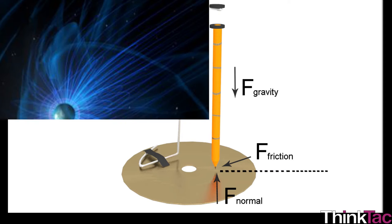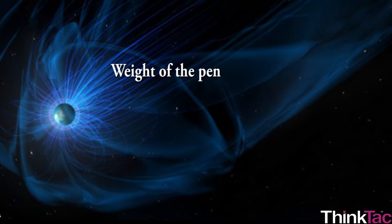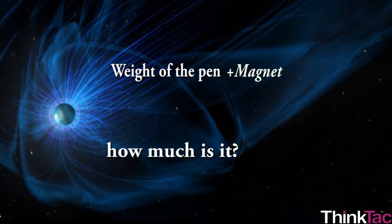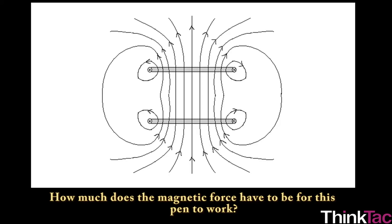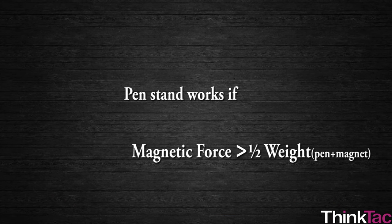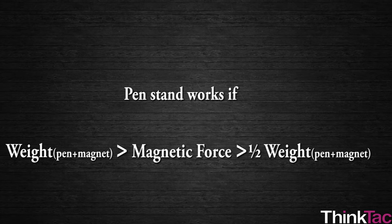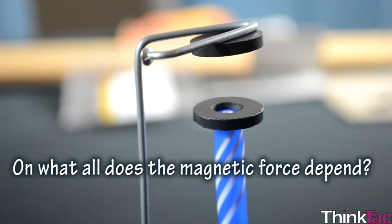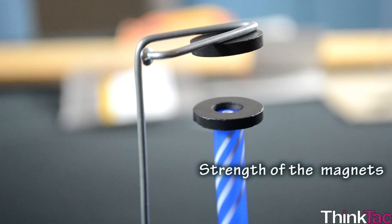Since gravity and friction play an important role in this model, it is important to know the weight of the pen plus the magnet, which can be estimated using an electronic weighing scale. How much can you tilt the pen before it falls? The pen stand works if the magnetic force is greater than half the weight of the pen plus magnet, but less than the total weight. The magnetic force depends on the strength of the magnets as well as the distance between them.